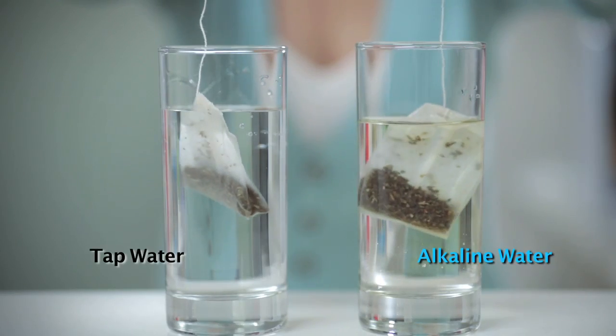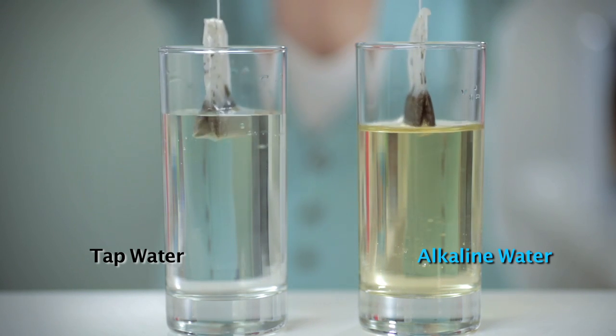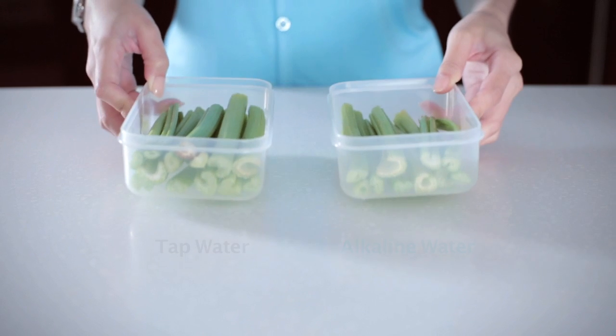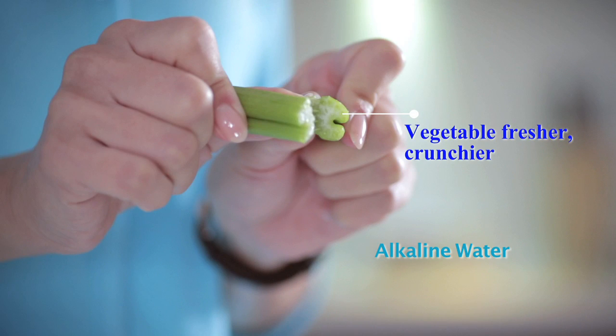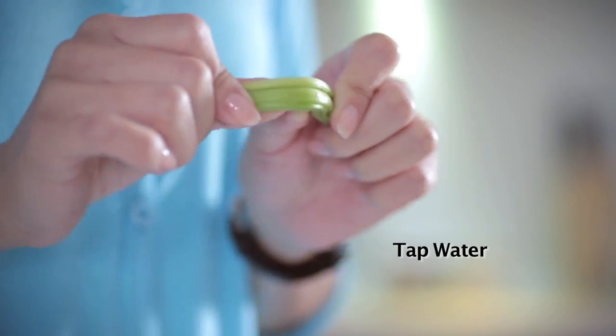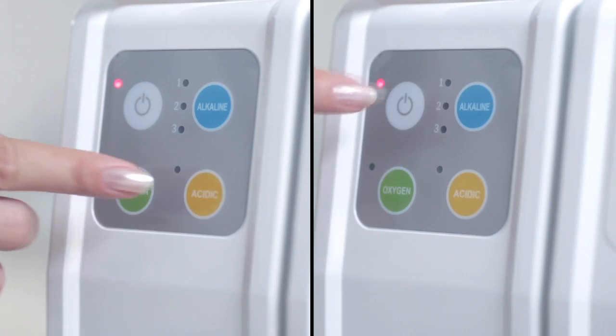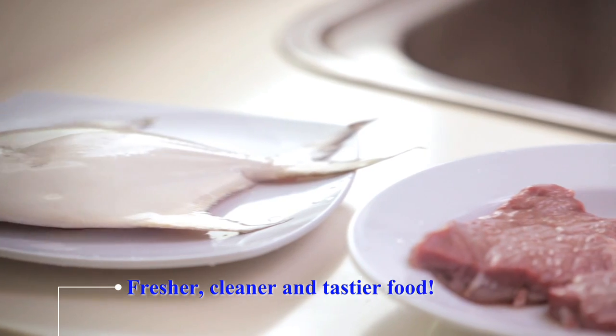The alkaline water with smaller molecular clusters really draws out the natural flavour of the food. You'll find that your vegetables are fresher and crunchier because the smaller water clusters get quickly absorbed and rehydrate the vegetables as they soak. With acidic and alkaline water, you can now experience fresher, cleaner, and tastier food.